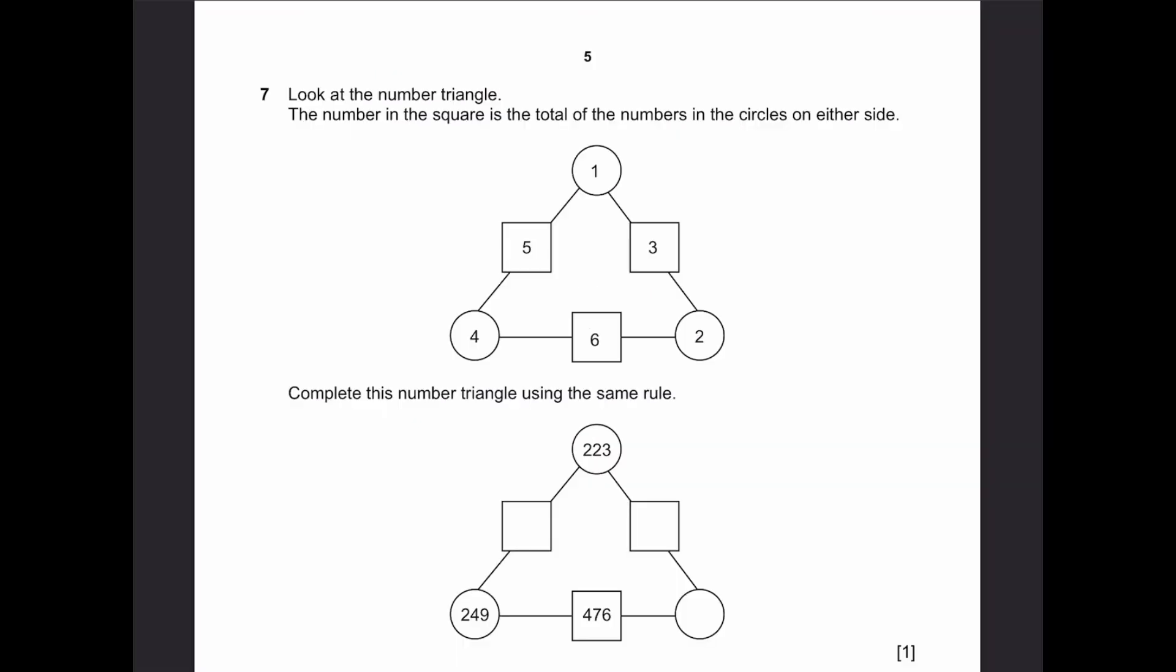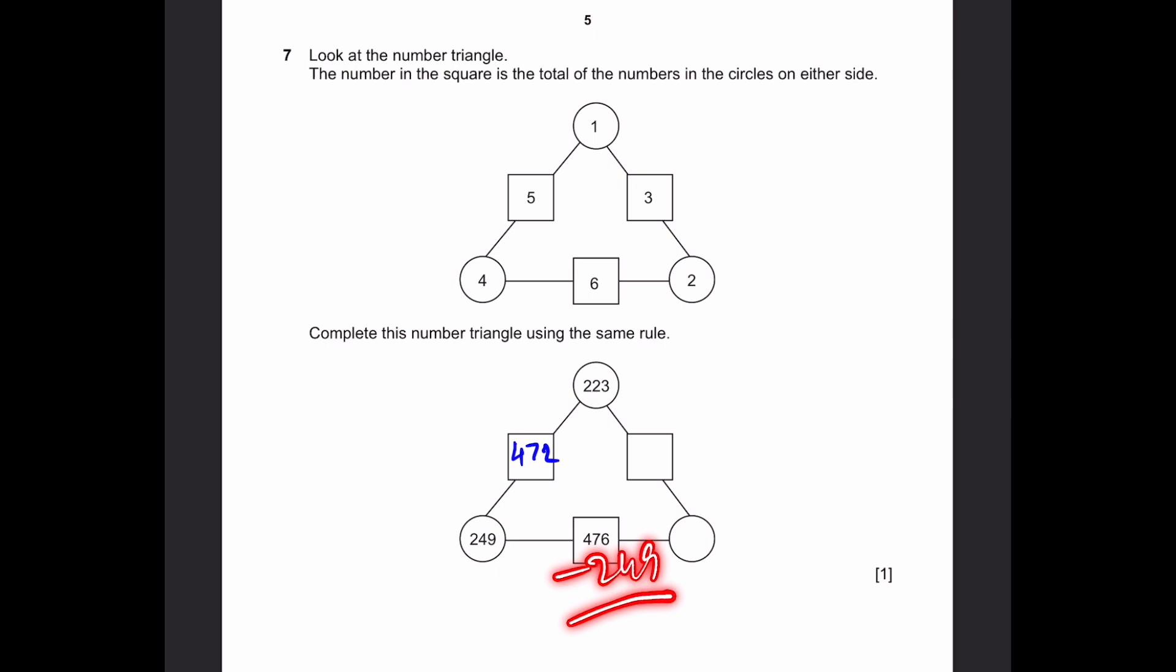Question 7. Look at the number triangle. Complete this number triangle using the same rule. We can see that the number in the square is the total of the numbers in the circles. So 1 plus 4, 5. 1 plus 2, 3. 4 plus 2 is 6. So complete this number triangle. We'll have to do 249 plus 223, that'll be equal to 472. 249 plus something is 476. So if you minus 249 from that, we get 227. So 227 is over here. And now 227 plus 223, that'll be equal to 450. That's the answer.